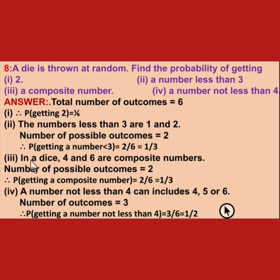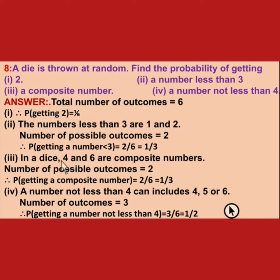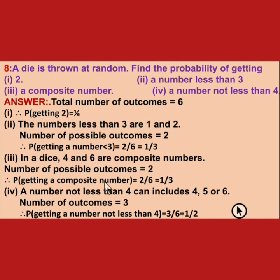Next, composite numbers are numbers with more than 2 factors. In a die, only 4 and 6 are composite because 1 is neither prime nor composite, 2, 3, and 5 are prime. So there are 2 composite numbers, giving probability of getting a composite number as 2 upon 6, which simplifies to 1 upon 3.